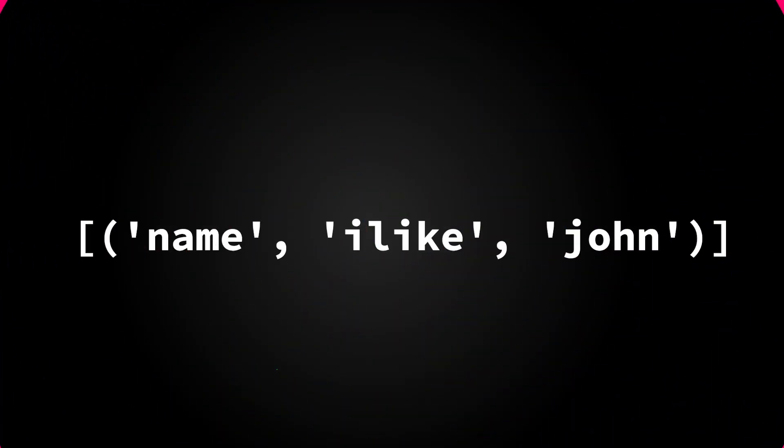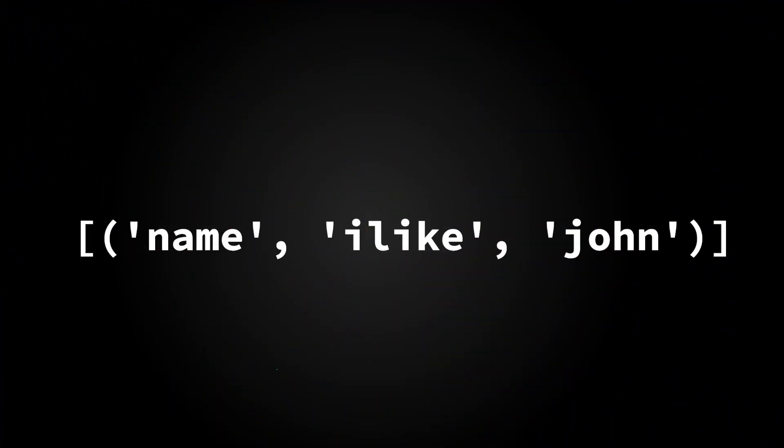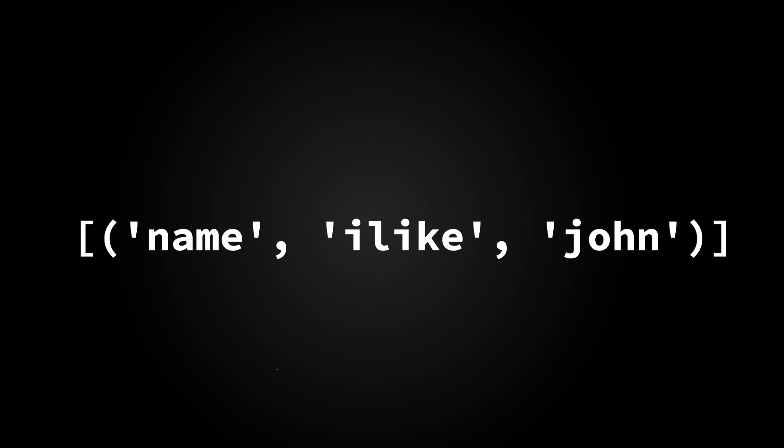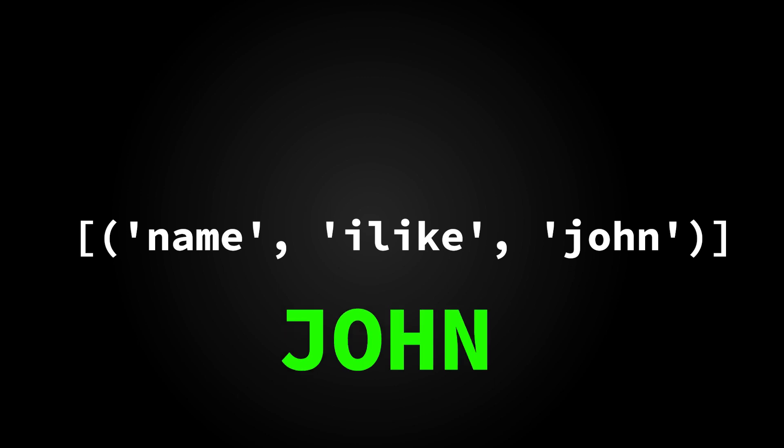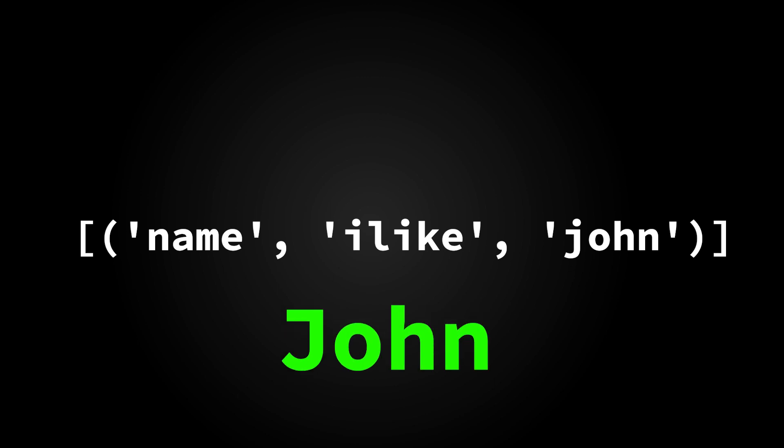The ilike operator is used to perform case-insensitive search. For example, 'name ilike John' will match records where the name field contains 'john', 'JOHN', or 'John' with an uppercase J.